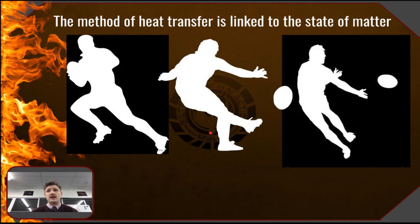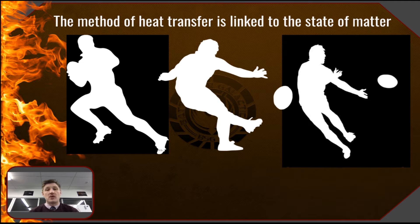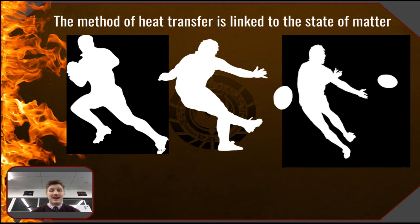To wrap up, here is a rugby analogy to remember the three types of heat transfer. Convection requires particles to move around in liquids and gases, carrying heat energy like a rugby player carrying and running with the ball — the whole atom moves around faster, bumping into other atoms. Radiation does not need any particles — it uses waves. This is like a rugby ball being kicked: once kicked, it doesn't need the rugby player and moves all by itself through the air.